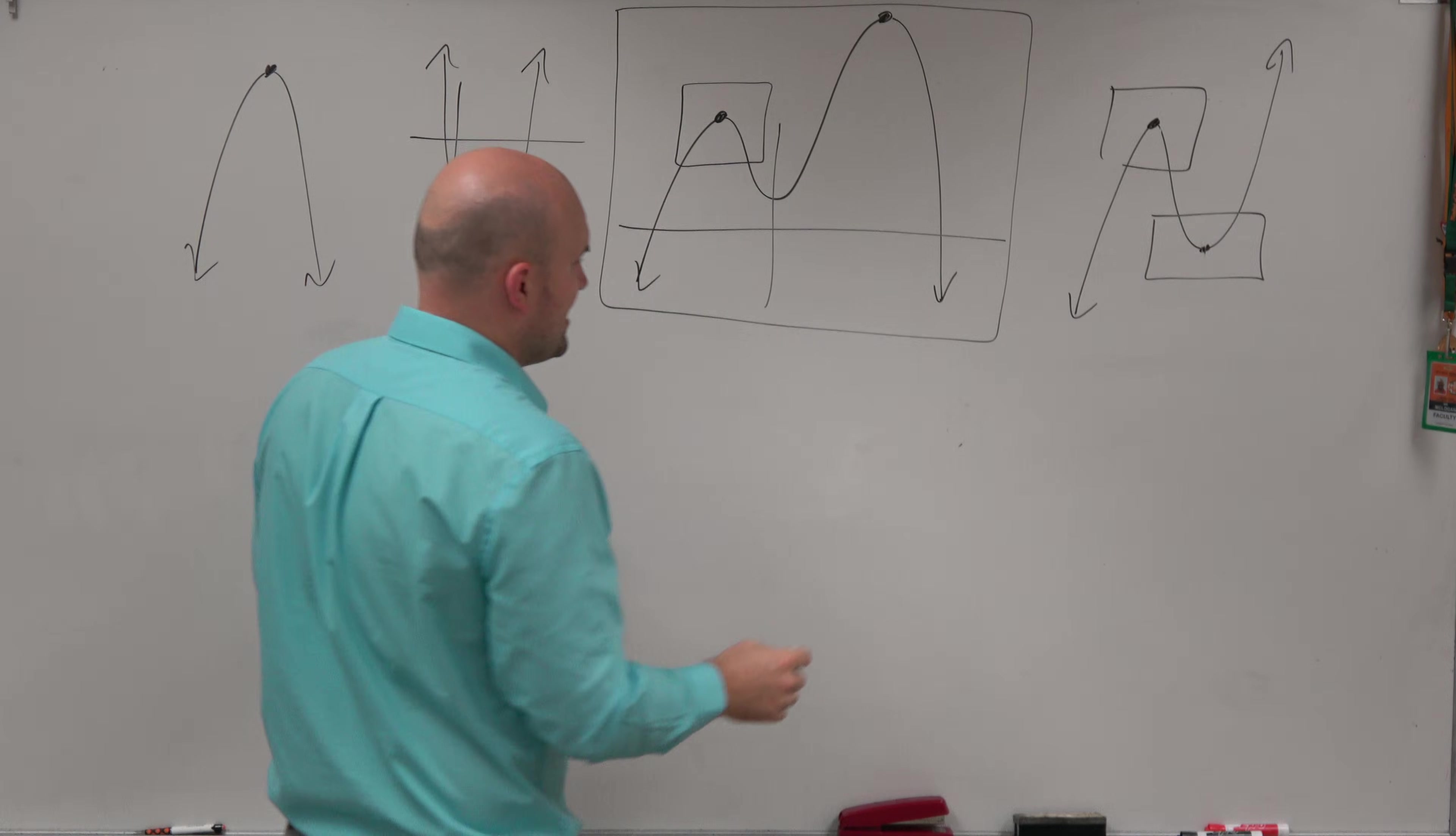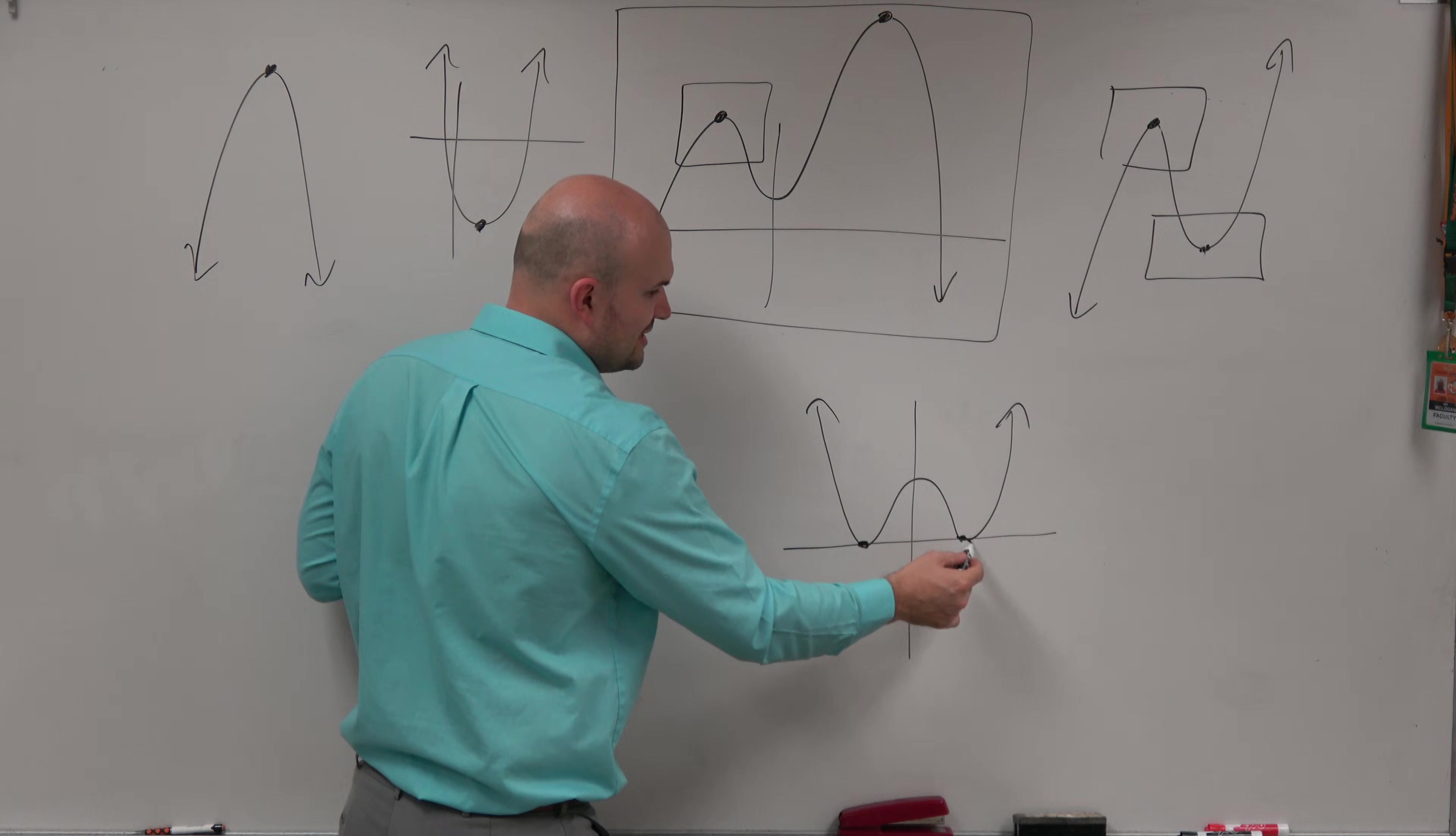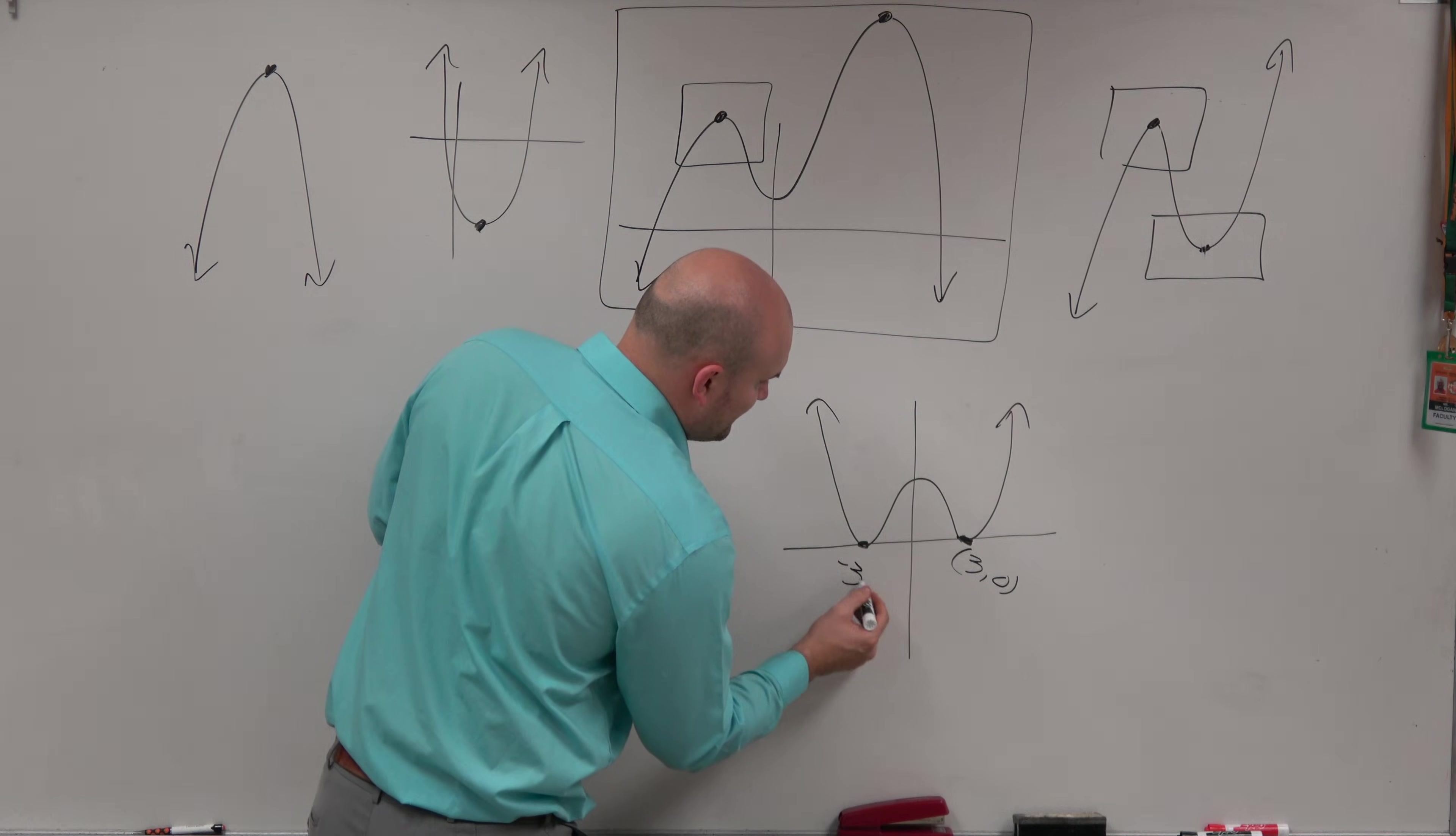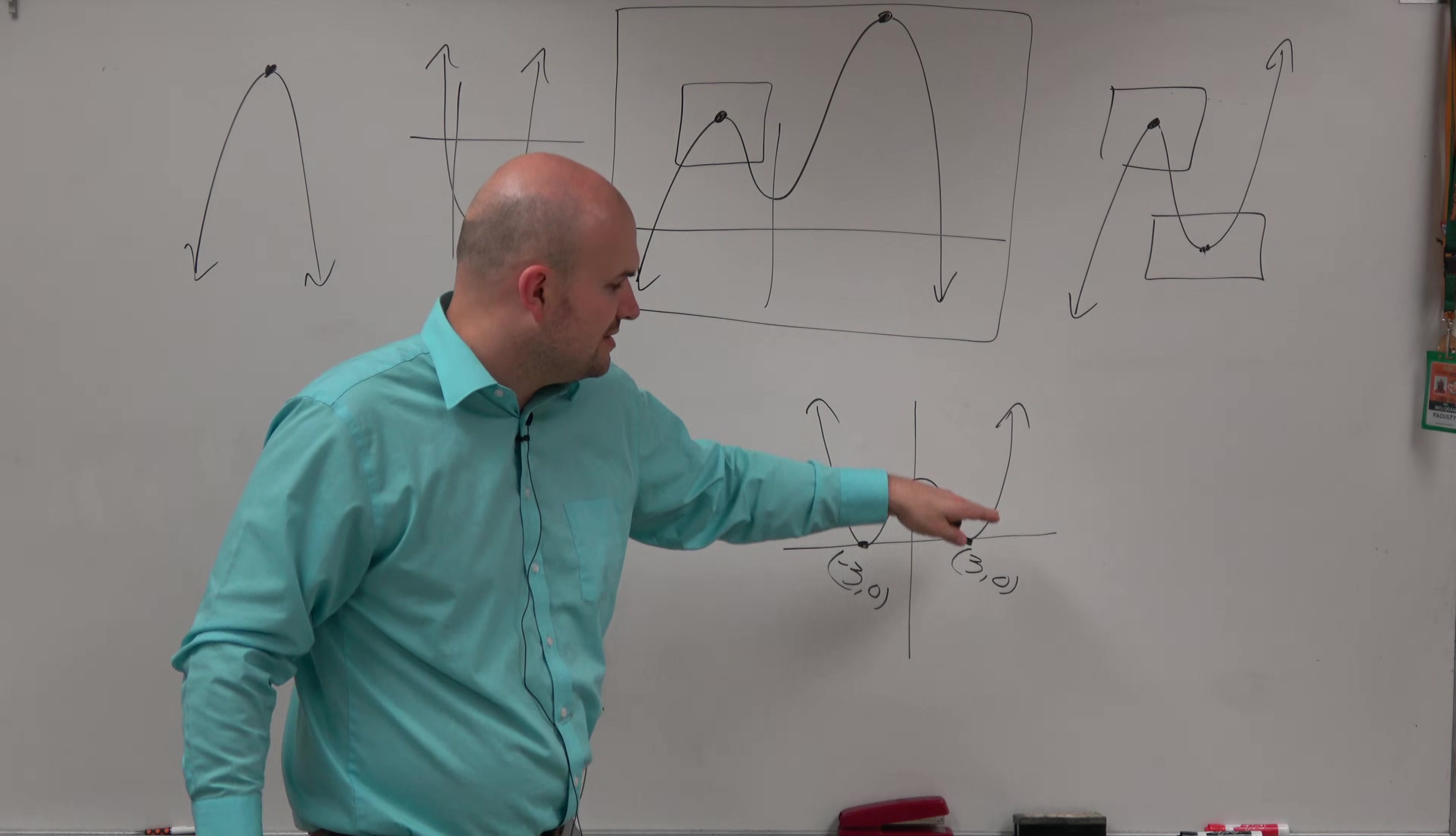The last thing I'll point out is we can also have graphs that have two extrema. Both of these points are your absolute minimums—the graph does not go below those two points. If we say this is three comma zero and this is negative three comma zero, when we're identifying them, we basically say at the points negative three comma zero and three comma zero, there are the absolute minimums.